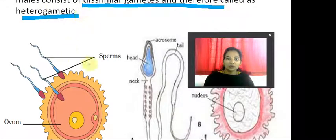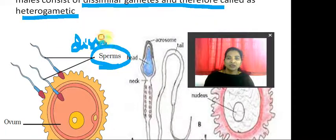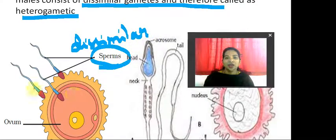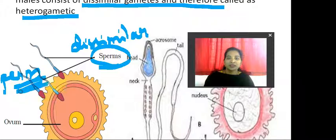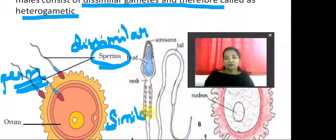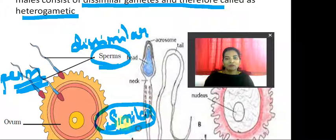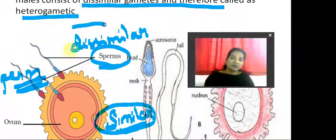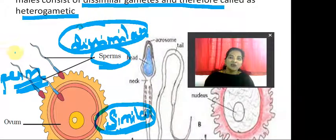Females consist of two similar gametes and are therefore called homogametic. Males consist of dissimilar gametes and are therefore called heterogametic. As you look at this sperm, the sperms are slightly dissimilar. As you look at the ovum, they are similar in shape and structure — that is why we call it homogametic. The ovum represents the female homogametic and sperm represents the male heterogametic.